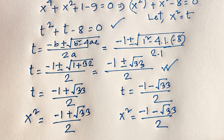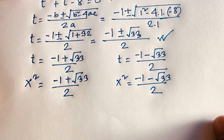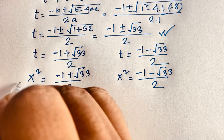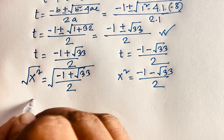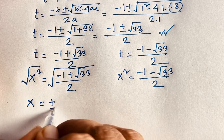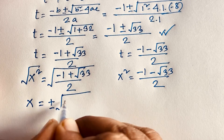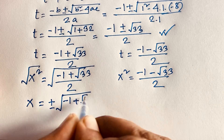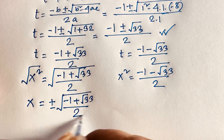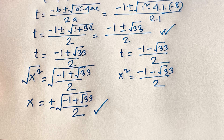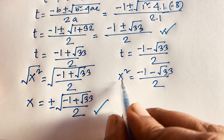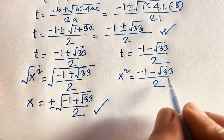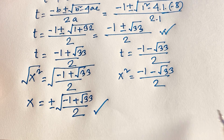Using square root on both sides, x equals plus or minus square root of (negative 1 plus square root of 33) / 2. This is our final answer for the first case. But recall x squared is always a positive value. The second case gives a negative value, so a positive cannot equal a negative — it is rejected.